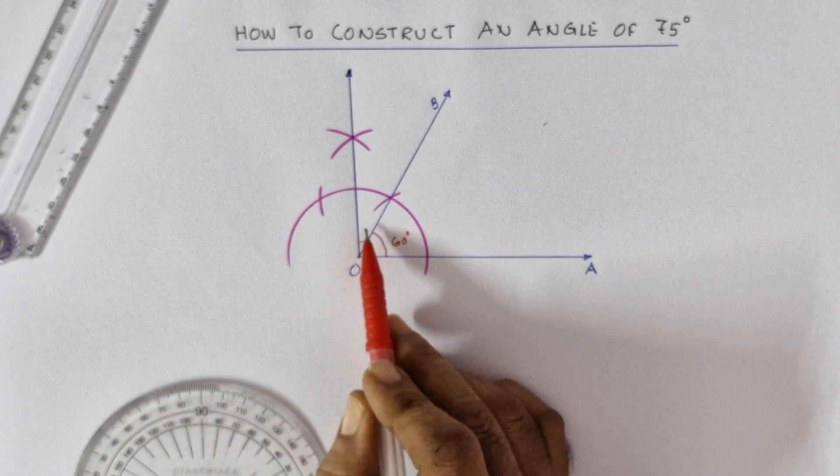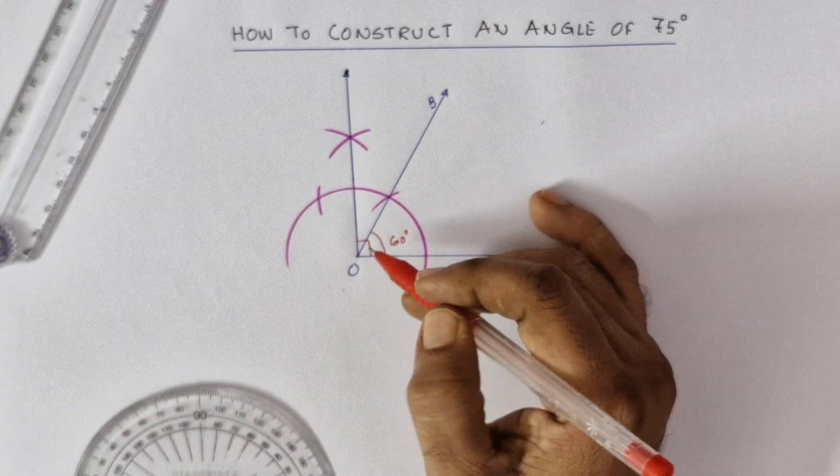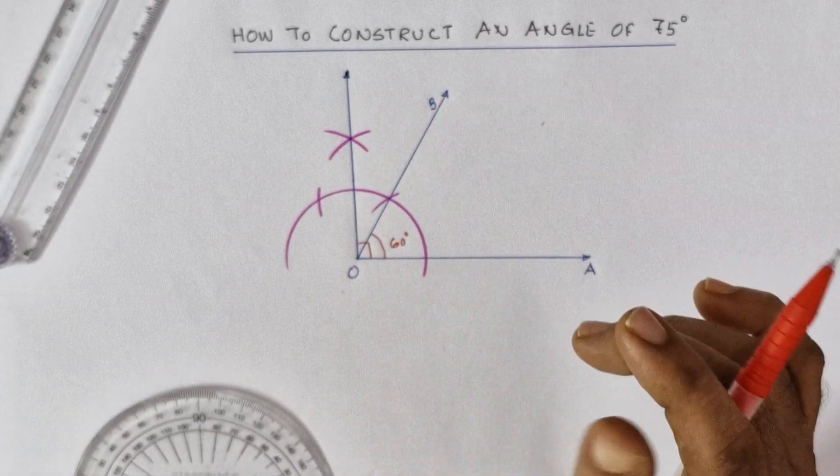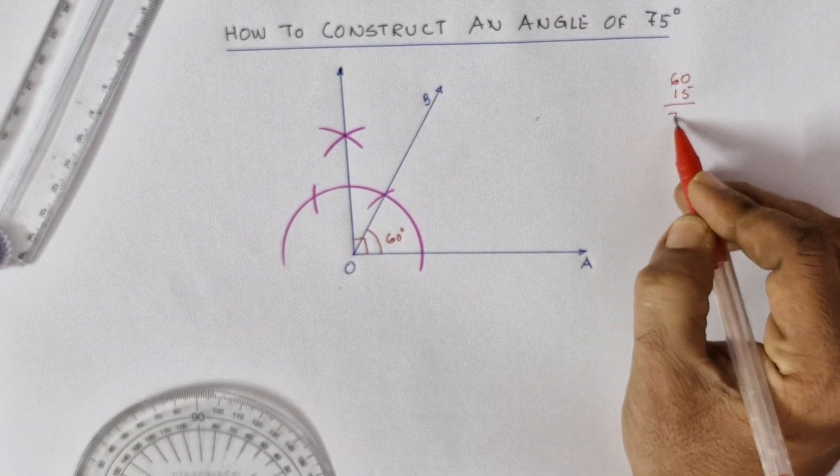What is left? See, what is the difference of 90 and 60? This is 30. So if I can bisect this angle of 30 degrees, I will get 15. What happens if I add 60 and 15? I get 75. So that is how we will be constructing an angle of 75 degrees.